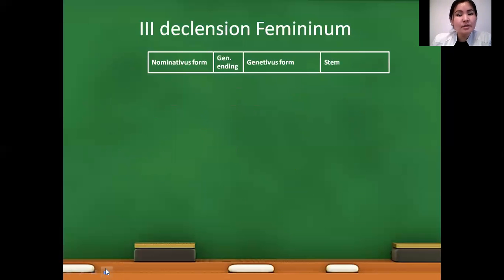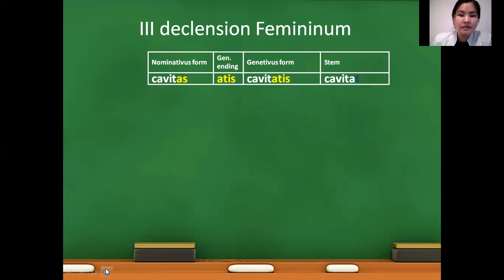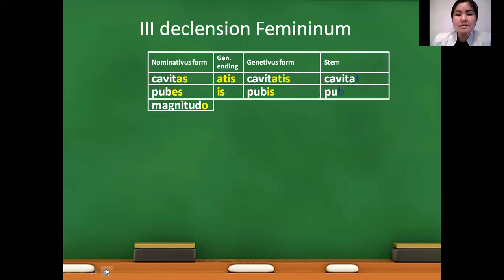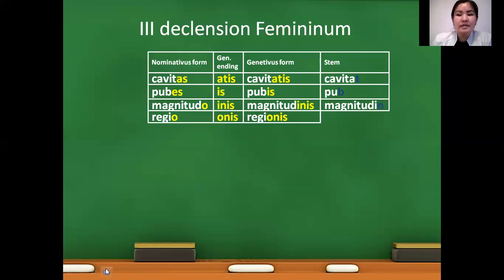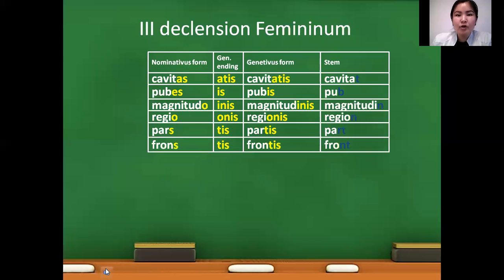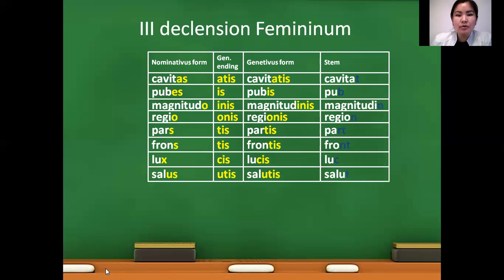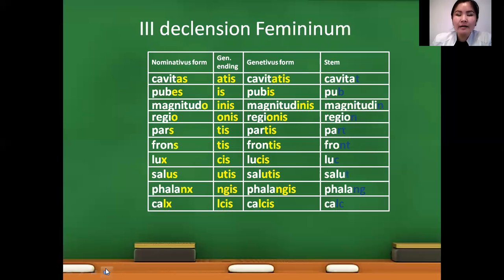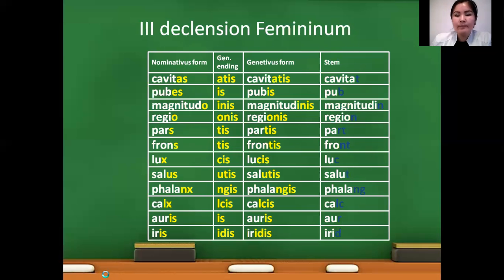In third declension femininum: cavitas — genitive cavitatis — stem: cavitat. Pubes — pubis — stem: pub. Magnitudo — magnitudinis — stem: magnitudin. Regio — stem: region. Pars — stem: part. Frons — stem: front. Lux — stem: luc. Salus — stem: salut. Phalanx — stem: falang. Calix — stem: calc. Auris — stem: aur. Iris — stem: irid.